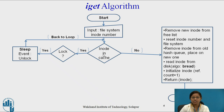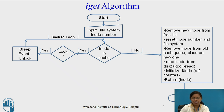If the i-node is not present in the cache, then it has to remove a new i-node from the free list. First, it has to reset the i-node number and file system number. It has to remove that i-node from the old hash queue and place it on the new hash queue, read the i-node from the disk using algorithm bread, initialize the i-node reference count equal to 1, and return that i-node with reference count 1 to the process.